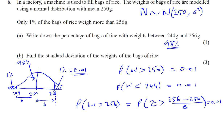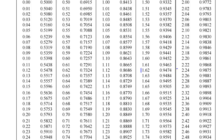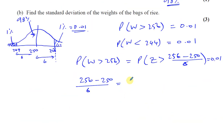The value of Z here — that is, (256 minus 250) over sigma — needs to satisfy P(Z > z) = 0.01. Looking at the bottom of the standard normal table for the exact percentage of one percent, which is 0.01, the corresponding Z value is 2.3263. So (256 − 250) / sigma = 2.3263.